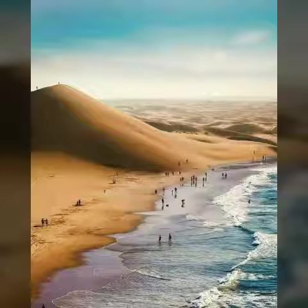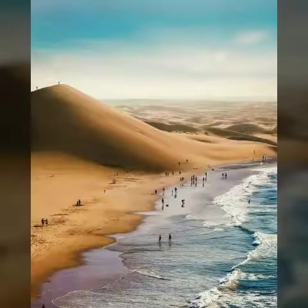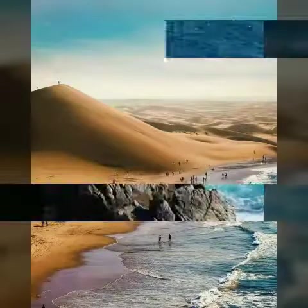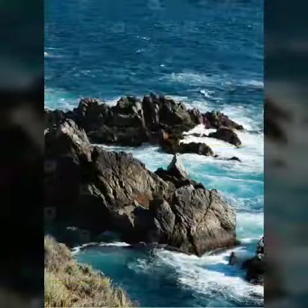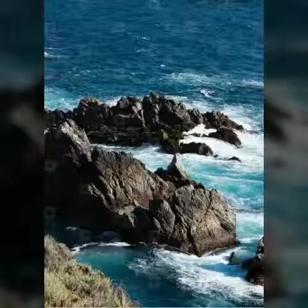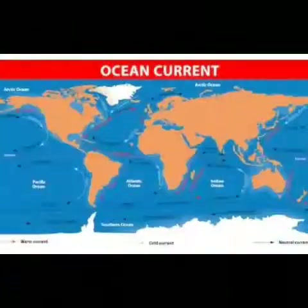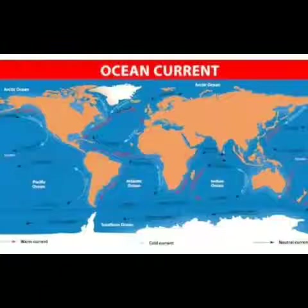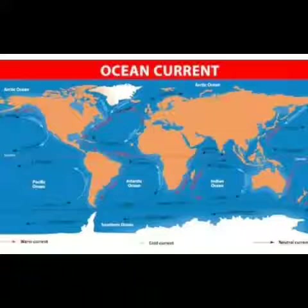Waves are a series of circular loop-like motions of surface water of the ocean. They are produced by winds, storms, or earthquakes. Currents are the regular channels of flowing water on the surface of the oceans, caused by the drifting effects of the wind along with temperature and salt concentration differences in ocean water. Tides are the rise and fall of sea levels, caused by the gravitational pull of the Moon and the Sun.